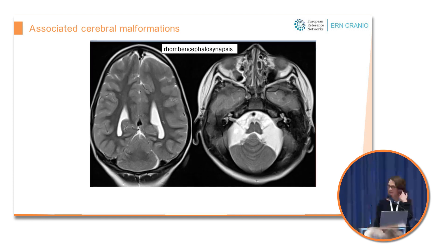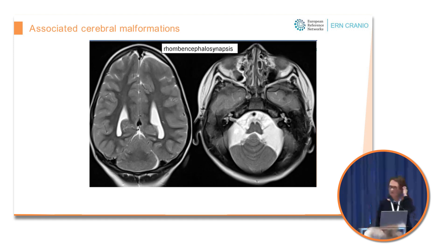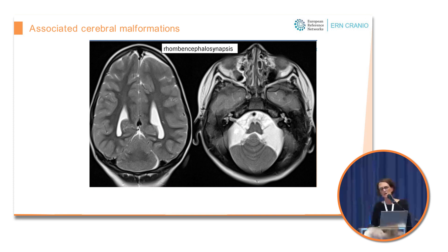He also has rhombencephalosynapsis — that is the fusion of both cerebellar hemispheres and a missing vermis, which is described in the radiology literature in conjunction with lambdoid synostosis.